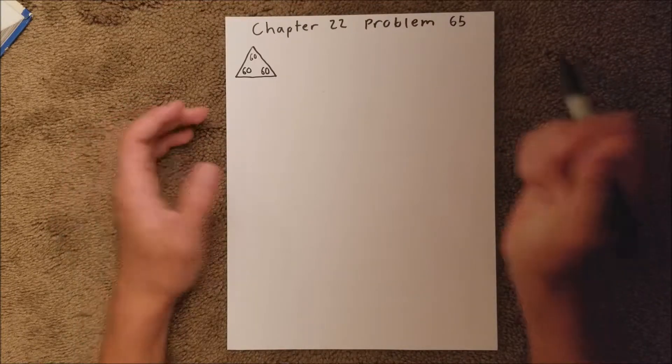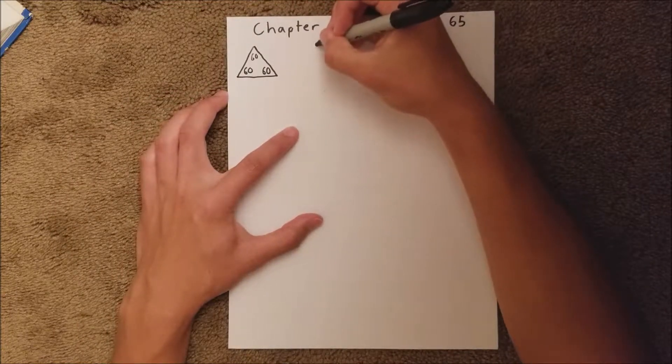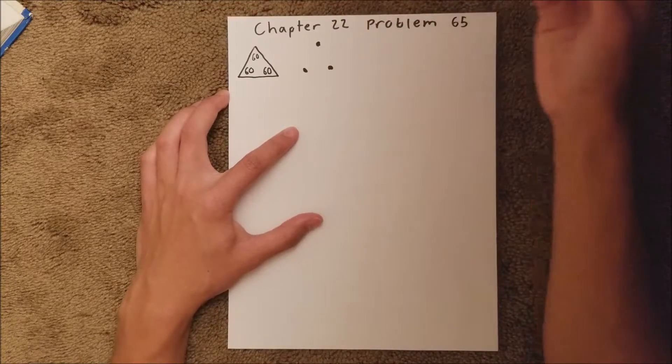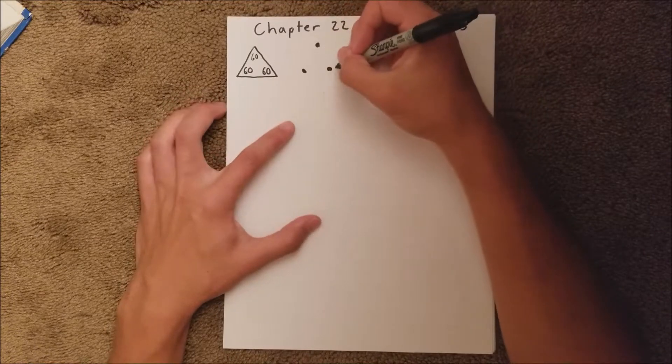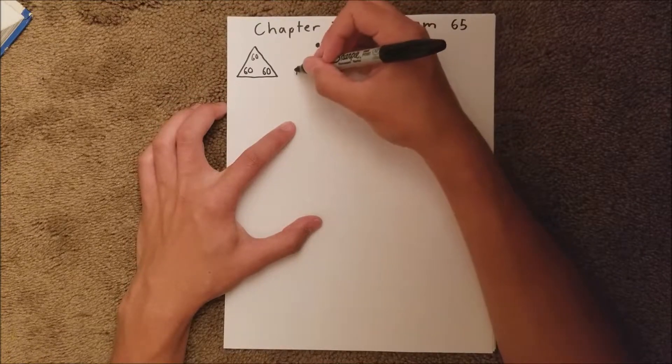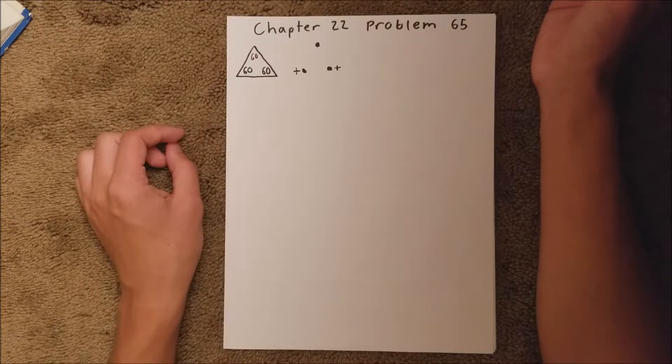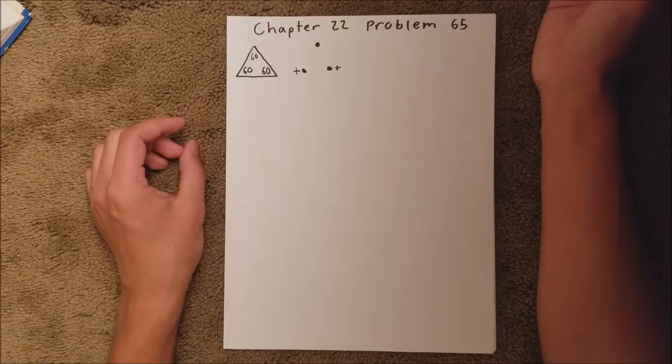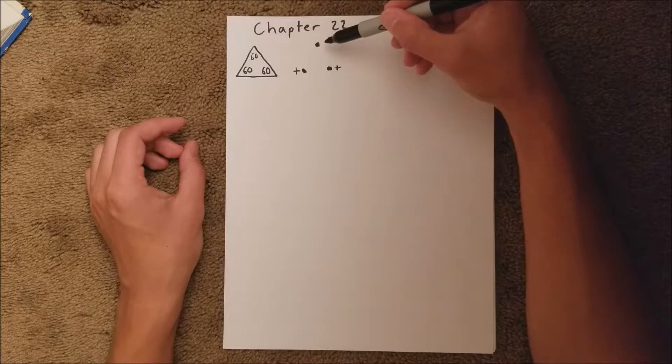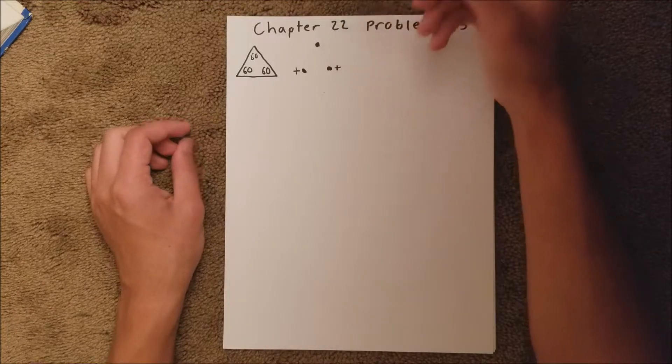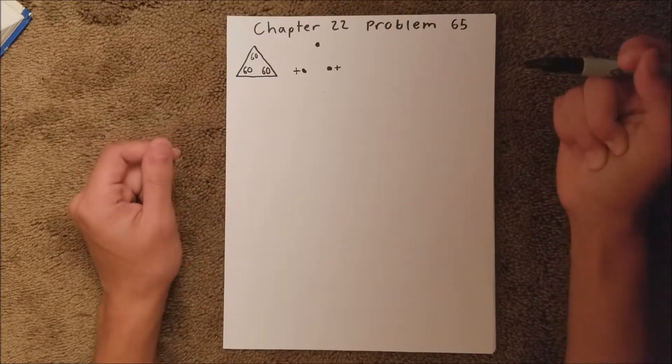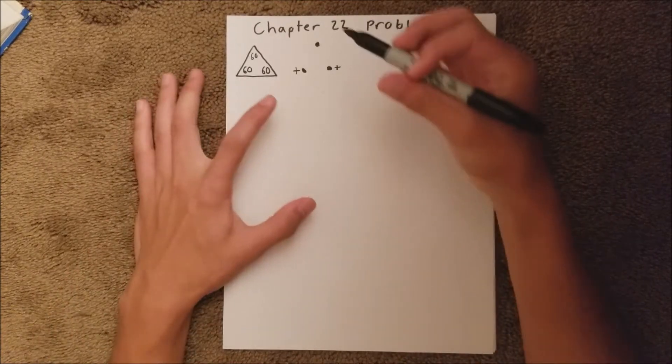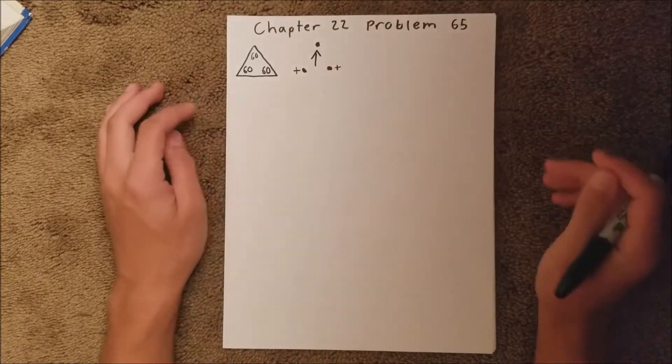But we're told that there's charges, so we have a charge here, a charge here, and a charge here in an equilateral triangle. And in the first situation, both of these are positive, and we are asked to find the magnitude of the electric field at this third point on the triangle. So if both of these are charged positively, the electric field is going to go upward toward the last particle.